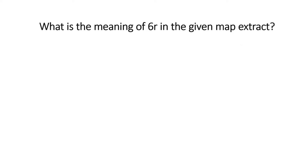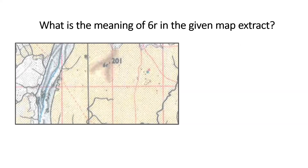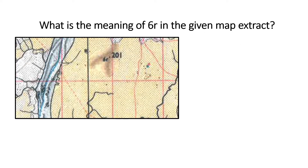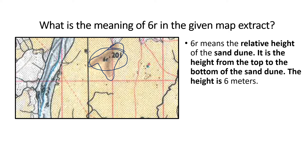In today's class we will learn about relative height and relative depth. In the given map, can you see the symbol '6R'? Can you identify what this feature is — this brown dotted feature? So '6R' means the relative height of the sand dune.